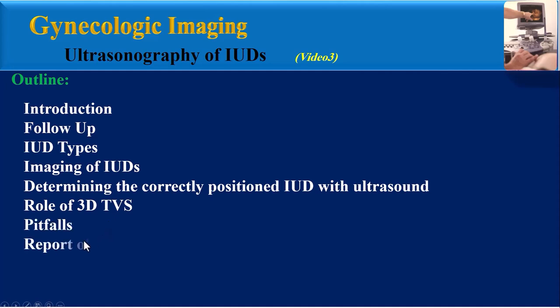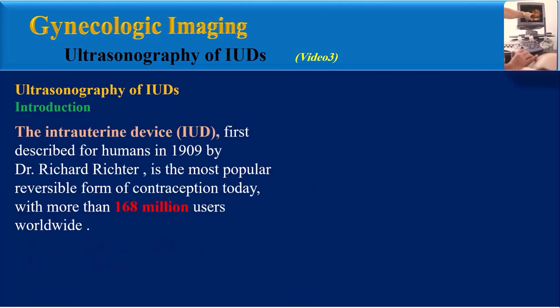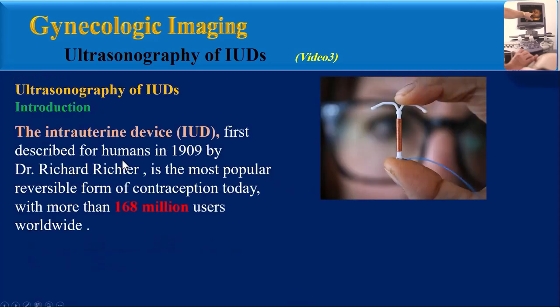Report of normal IUD position and final teaching points. First, introduction: the intrauterine device, or IUD, was first described for humans in 1909 by Dr. Richard Richter.